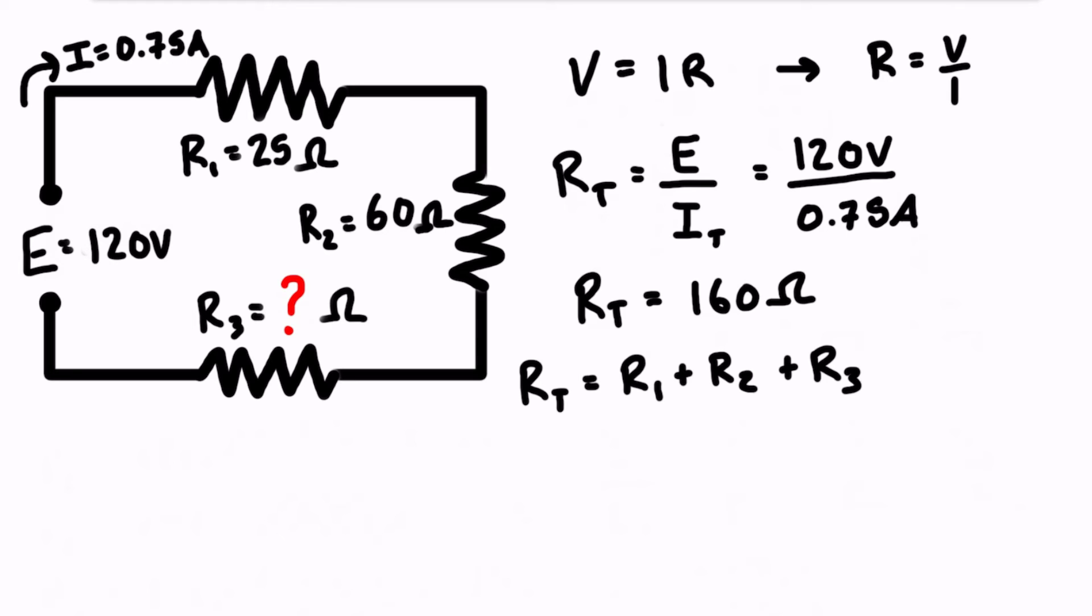We know that the total resistance is 160 ohms. We know that R1 is 25 ohms plus R2 which was 60 ohms plus R3 so we're going to have to rearrange for R3.